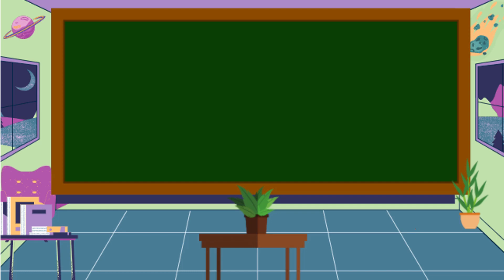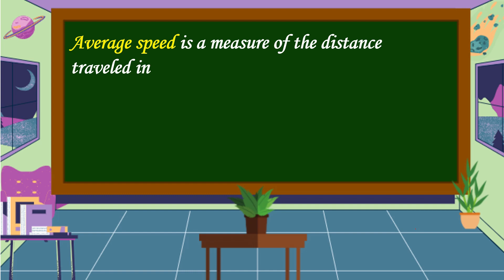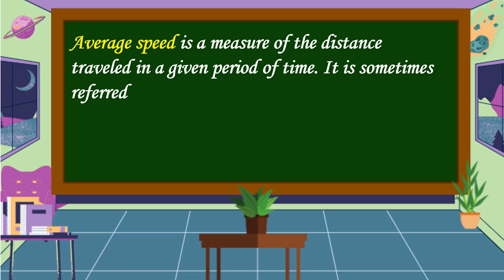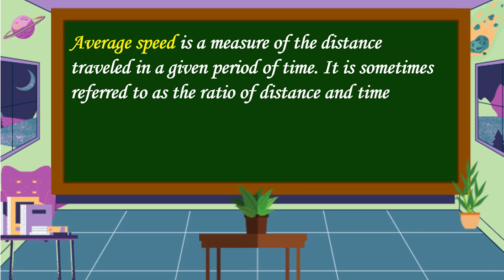What do you mean by average speed? Average speed is a measure of the distance traveled in a given period of time. It is sometimes referred to as the ratio of distance and time. The formula for average speed is: average speed is equal to distance divided by time.